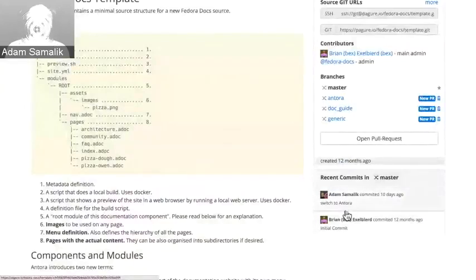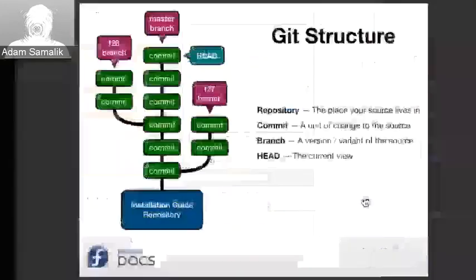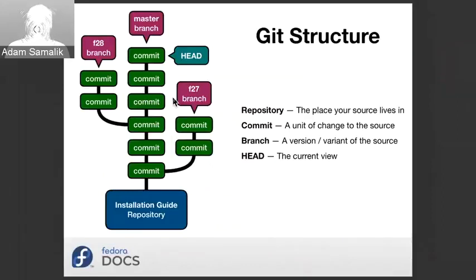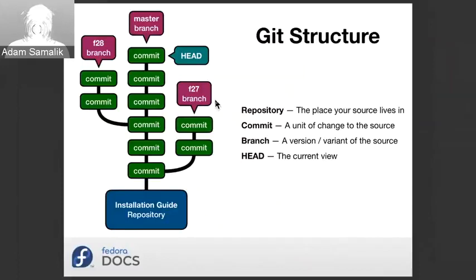There are also branches, which are like versions or variants of the source. In the example here, I have the installation guide and it has three branches — maybe three versions: one for F27, one for F28, and one for master which is for Fedora Rawhide, and that's where new features come. When Fedora 29 comes in, there will be a new branch F29. And then there is head, which is the current view you see in your directory structure on your computer. So: repo, commits as the units of changes, and also branches if you want to track different versions.